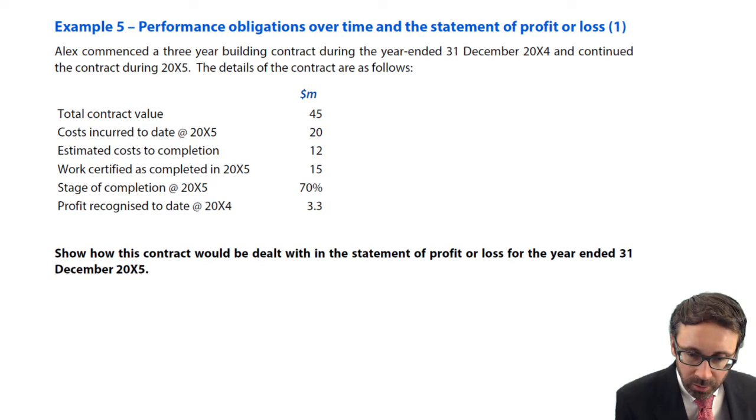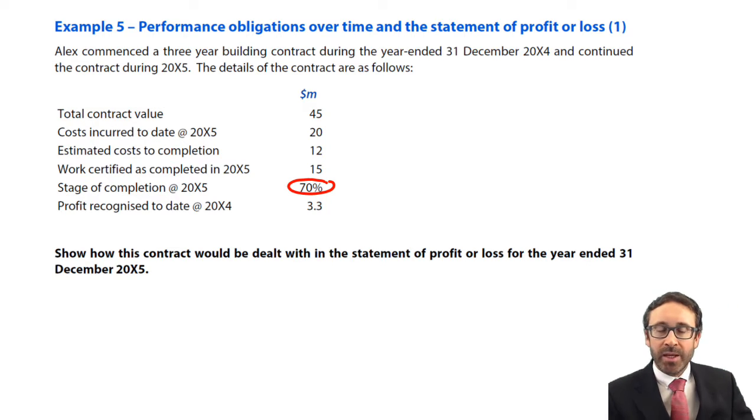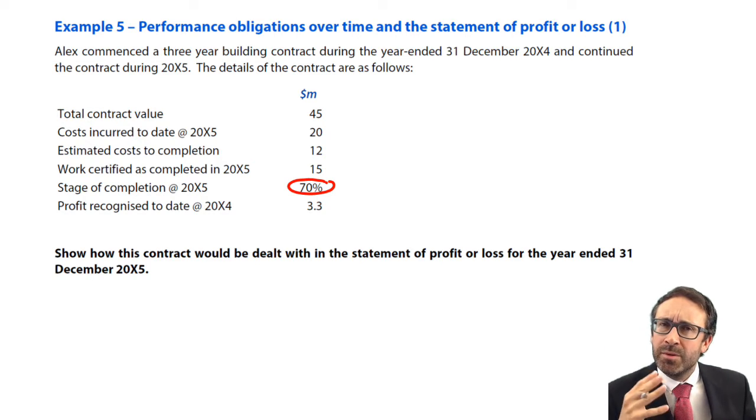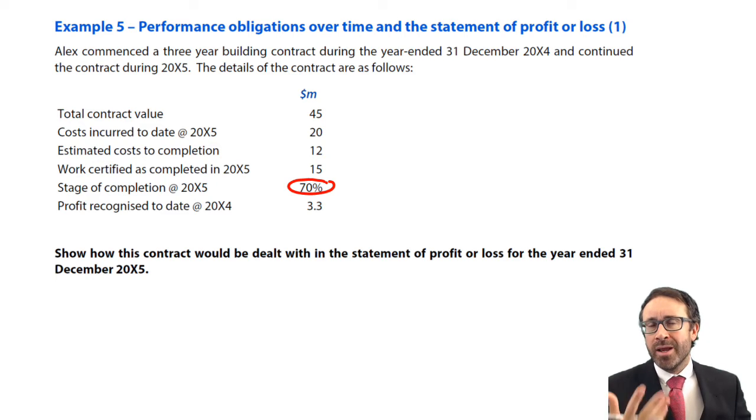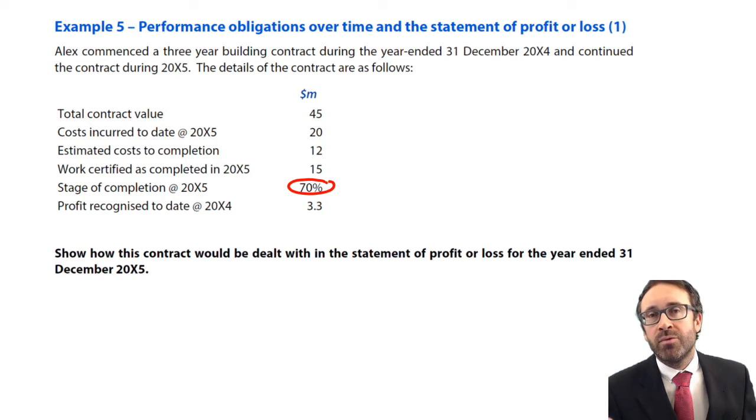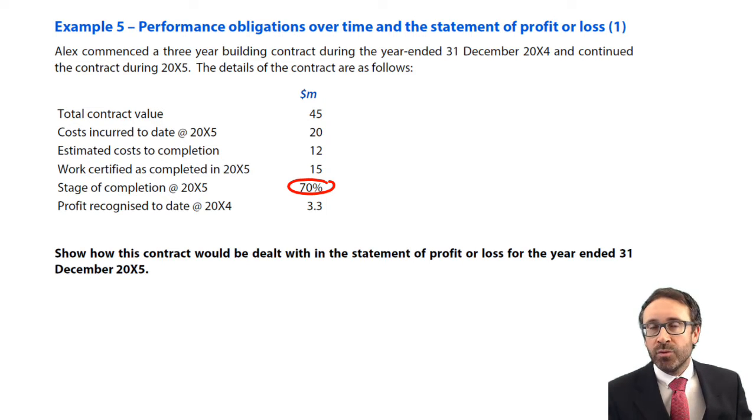Here within this question, we are told that within this contract, it is 70% complete. You could use the output method, you could use the input method, but here we're told. Now again, the focus on this example and the following example is we're going to focus on the statement of financial position, because that's regularly where you see revenue. It's the only place where you see revenue. But understood how to recognize the amounts within profit or loss in relation to whereby the stage of completion is over time.